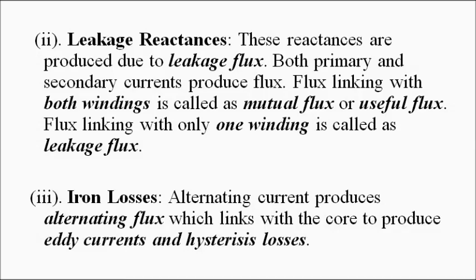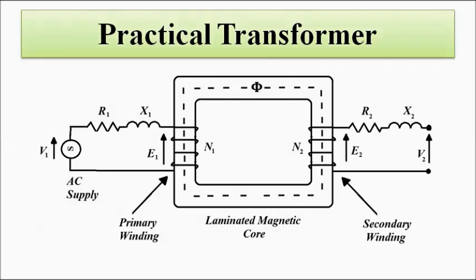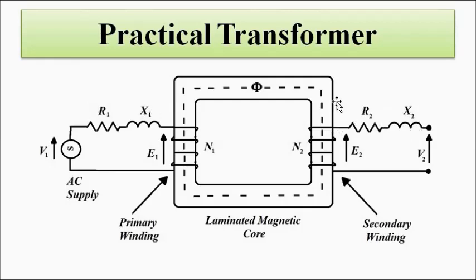A practical transformer can be visualized with a laminated core, primary winding, and secondary winding, where R1 and X1 represent the resistance and inductance of the primary winding, and R2 and X2 represent the resistance and inductance of the secondary winding — not pure inductance, but some amount of resistance combined with inductance.